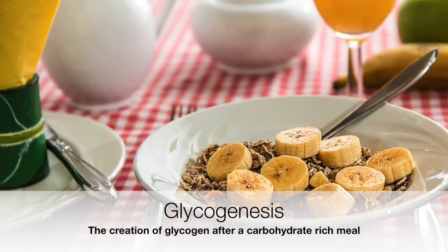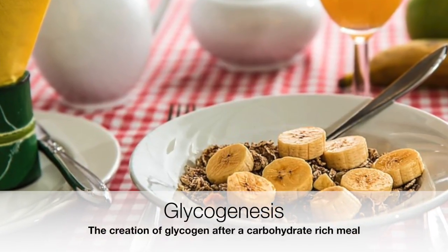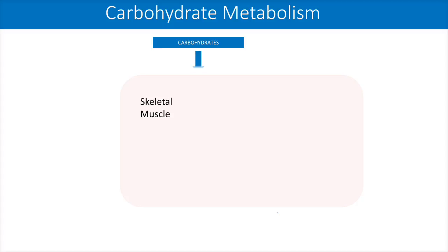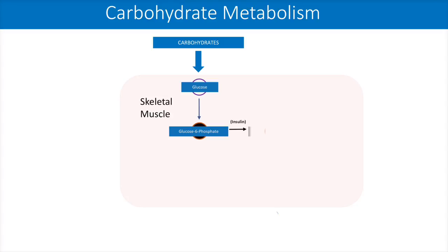Carbohydrate metabolism. Glycogenesis — the creation of glycogen after a carbohydrate-rich meal, such as breakfast. After having breakfast, the carbohydrate is broken down into glucose, which makes its way to skeletal muscle cells. In the presence of insulin, it is phosphorylated to give glucose 6-phosphate, which in turn is converted to glucose 1-phosphate — the first true step of glycogenesis. UTP then activates glucose 1-phosphate to give UDP glucose, and eventually forms glycogen.